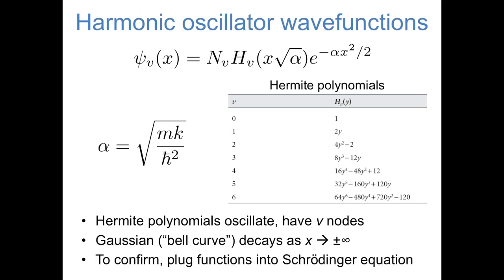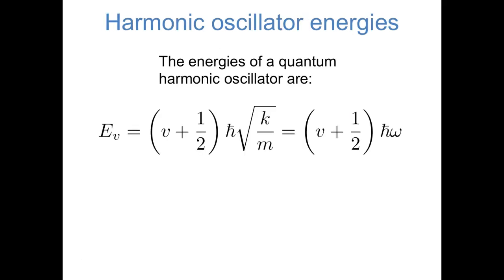Even though we weren't really in a position to solve the Schrödinger equation exactly for the harmonic oscillator, we can confirm fairly easily that the wave functions are solutions to the Schrödinger equation — you can just plug them in and show that they are energy eigenfunctions. If you were to solve for the energies of those wave functions, you would find that the energies corresponding to a value of v are equal to v plus one-half times h-bar times the square root of k over m, where k is the spring constant and m is the mass of the particle. Sometimes this is also written more concisely as v plus one-half times h-bar times omega, where omega is the frequency of a classical Hooke's Law spring.